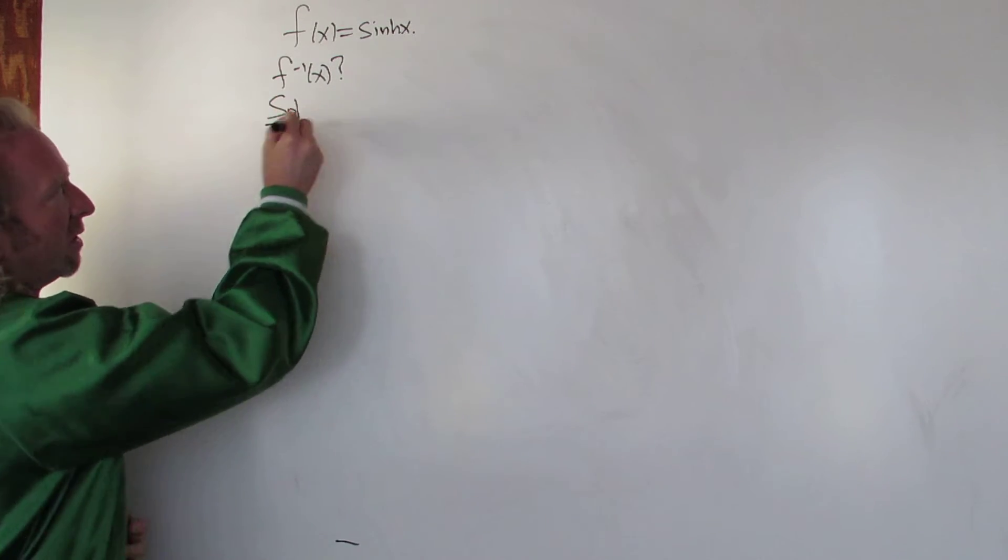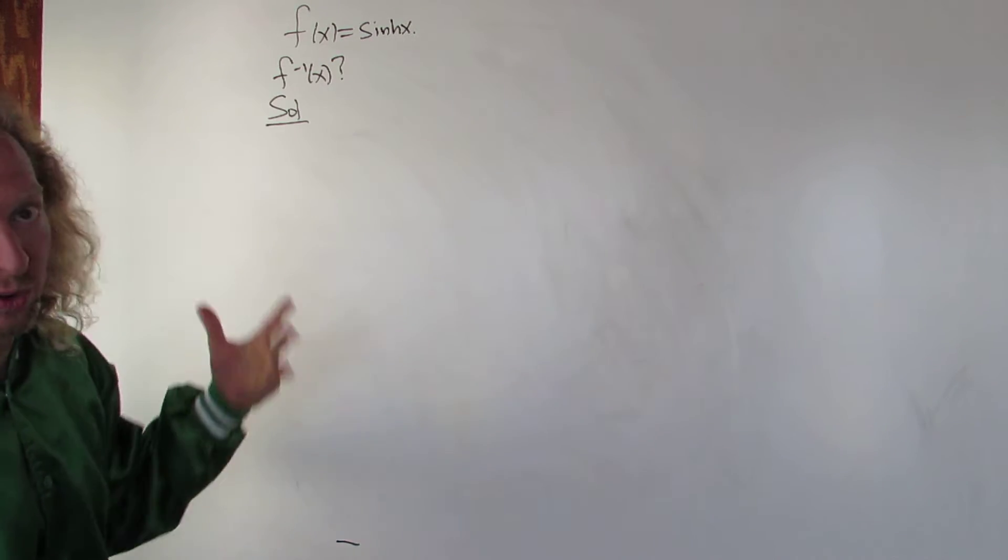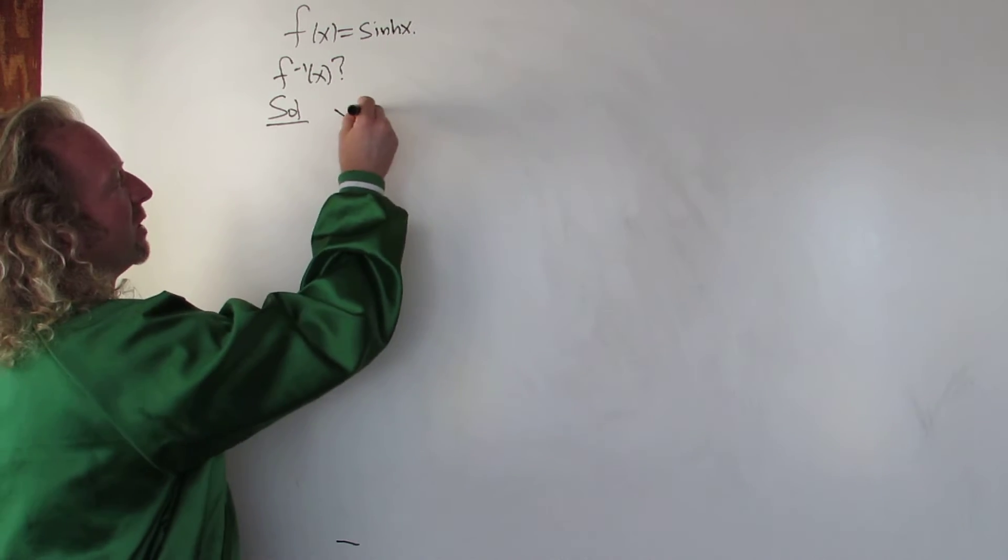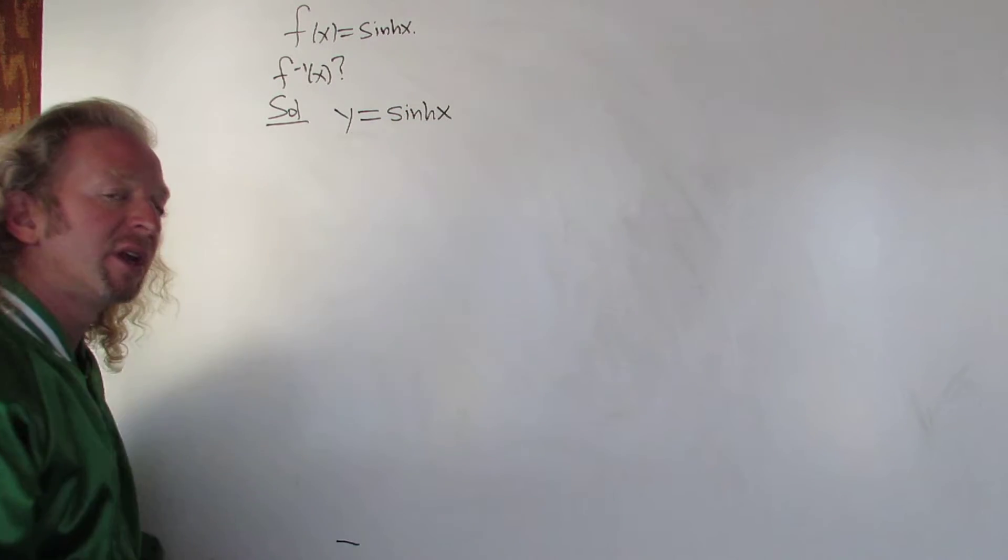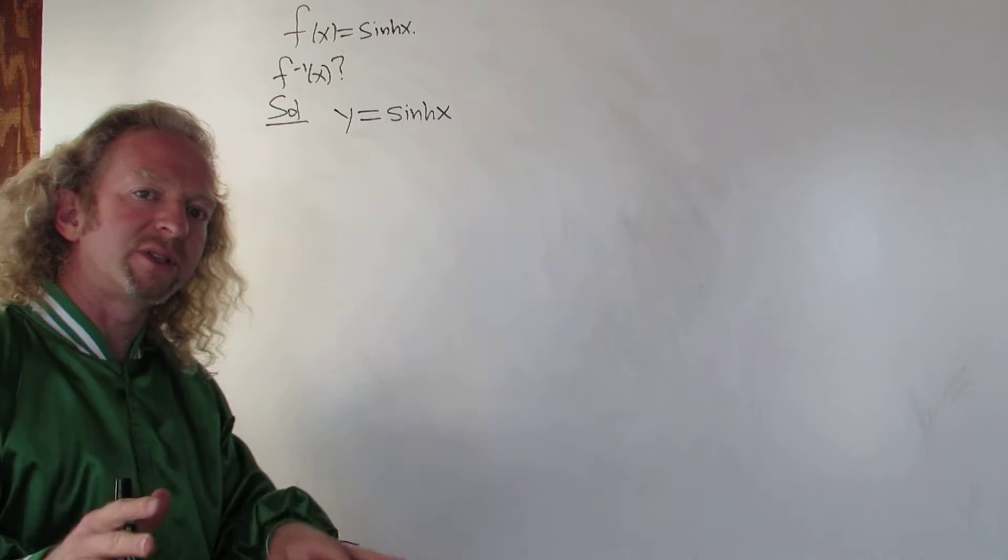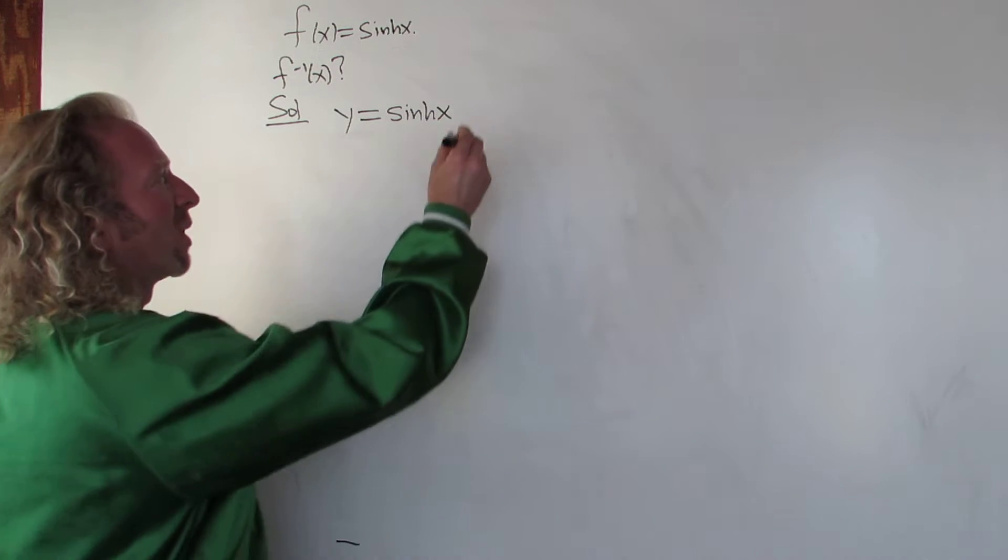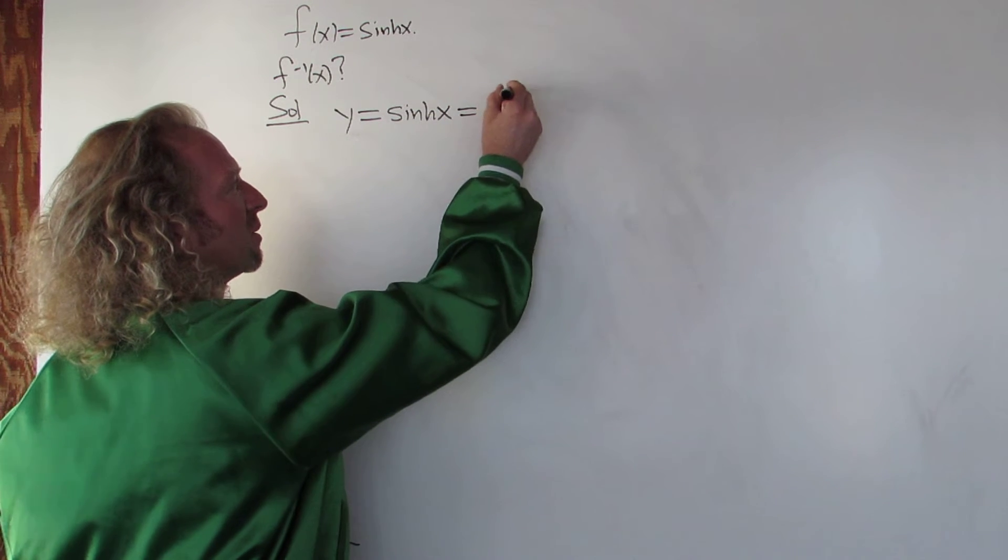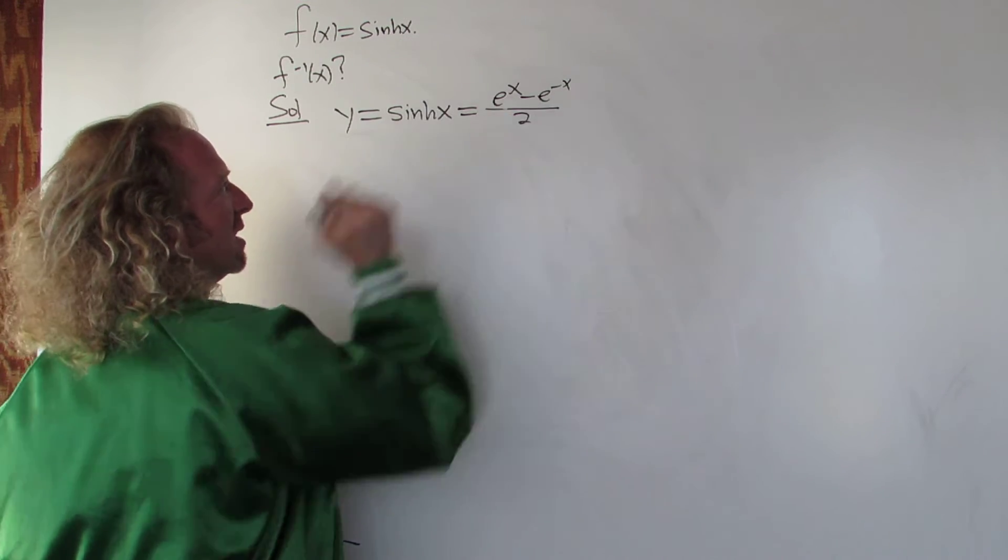So solution. To find the inverse of the function, usually you start by calling the function y. So we're going to let y be equal to the hyperbolic sine of x, sinh x. Now what is the hyperbolic sine? It's half the difference of e to the x and e to the negative x. So you can write it like this. So it's half the difference of e to the x and e to the negative x.